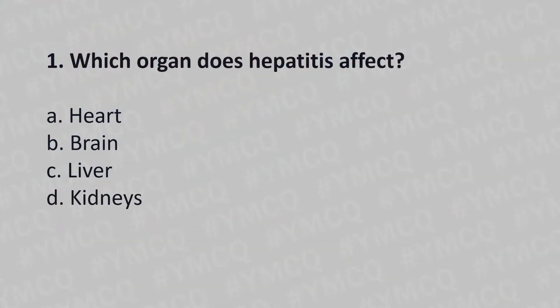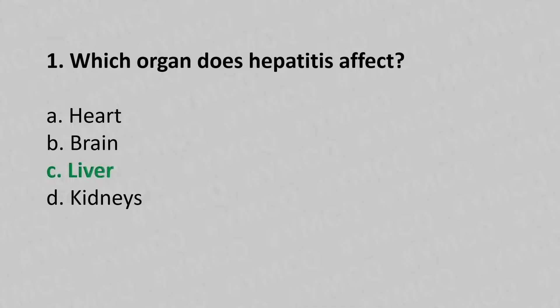Which organ does hepatitis affect? Option A, heart. Option B, brain. Option C, liver. Option D, kidney. And the answer is... Option C, liver.